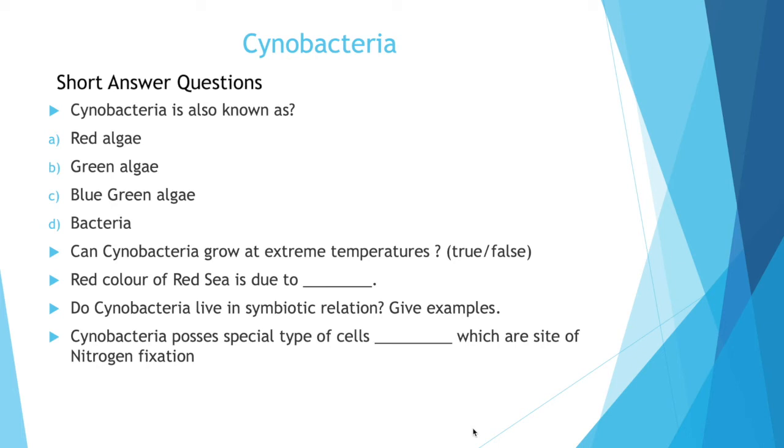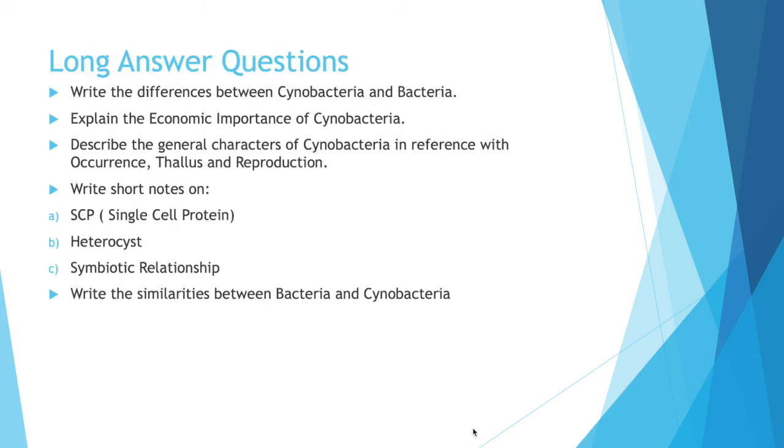Next question. Cyanobacteria possesses special type of cells which are site of nitrogen fixation. The answer is cyanobacteria possess special type of cells known as heterocyst which are the site of nitrogen fixation. So this completes our short answer questions.